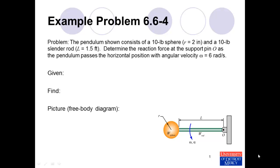This example is from the text Conceptual Dynamics, specifically example 6.6-4. The problem statement reads: the pendulum shown consists of a 10-pound sphere with radius 2 inches and a 10-pound slender rod of length 1.5 feet. Determine the reaction force at the support pin O as the pendulum passes the horizontal position with angular velocity omega equals 6 radians per second.